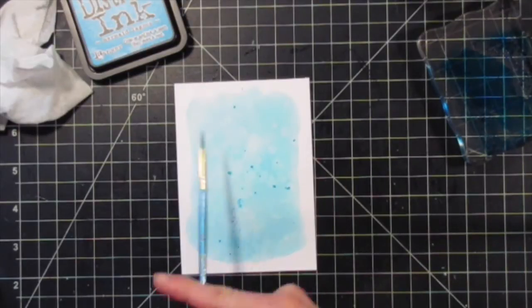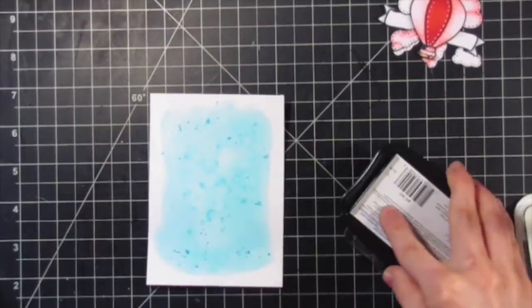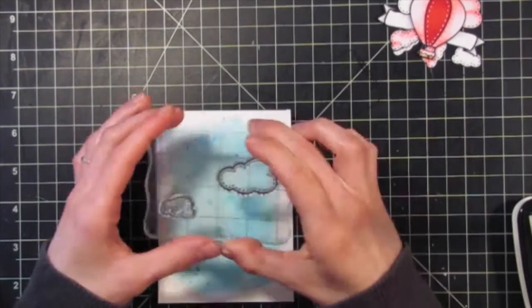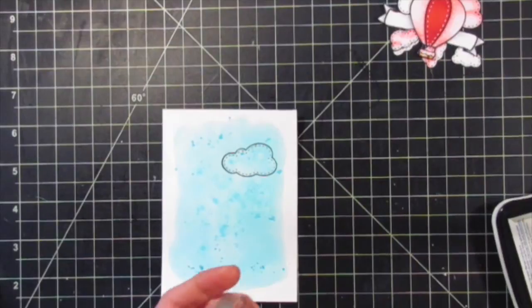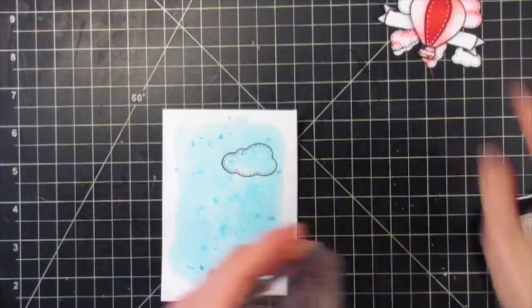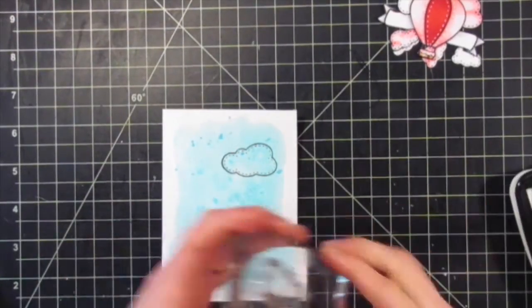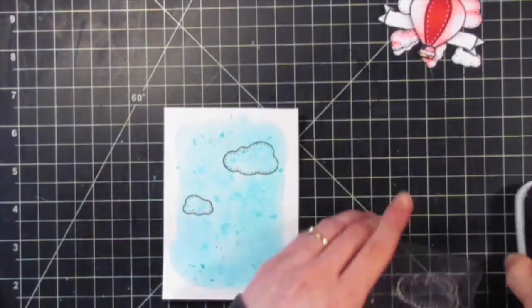Now I'm taking that cloud stamp again and stamping it on my panel to create a guide for where I'm going to be placing the rest of the clouds. I'll just stamp the three of them and then cover them up with the clouds that I've colored and cut out.